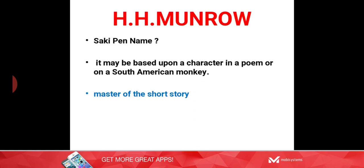The name Saki was based upon a character — a South American monkey — which was called Saki, and so he adopted that name as his pen name. H.H. Munro is called the master of the short story, as far as English literature is concerned.